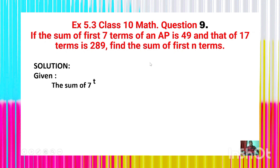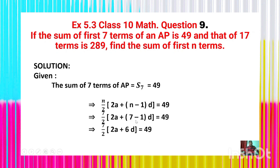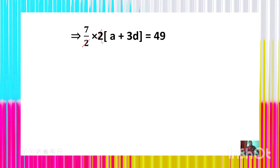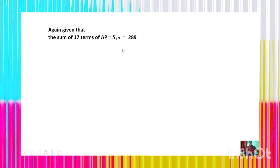Given that the sum of the first 7 terms of the AP, S₇ = 49. Using the formula Sₙ = (n/2)[2a + (n−1)d] = 49, substituting n = 7: (7/2)[2a + 6d] = 49. Taking 2 as a common factor: (7/2) × 2 × (a + 3d) = 49. The 2s cancel, giving 7(a + 3d) = 49, so a + 3d = 7. This is equation 1.